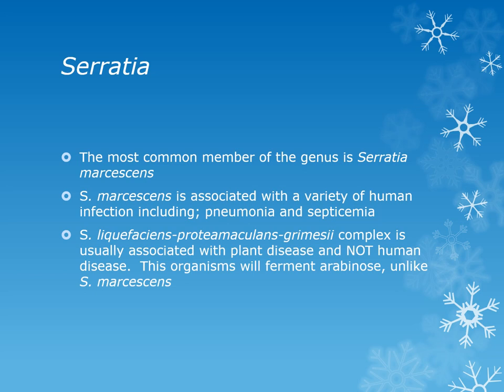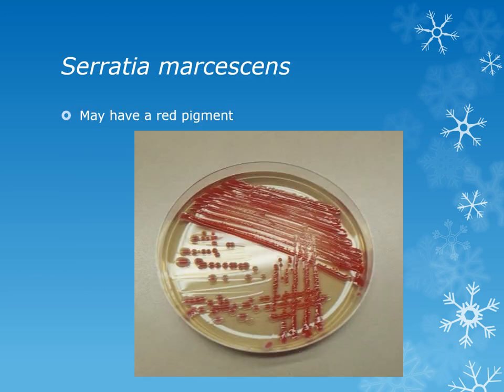The most common species is Serratia marcescens, associated with pneumonia, septicemia, and nosocomial infections, and is especially problematic for immunocompromised patients. It can also be quite antibiotic resistant. About 90% of the time this organism is gray, but a mutation in some strains causes a characteristic brick-red pigment.